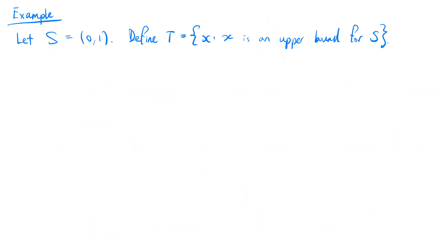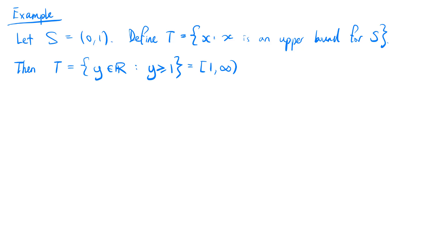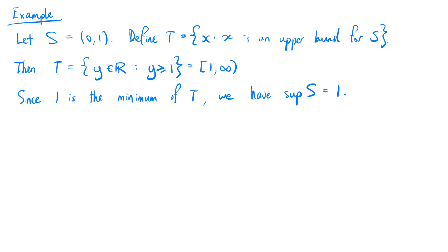Let's look at an example. Let s be the open interval (0,1). Define the set t to be the set of x where x is an upper bound for s. Then t is the set of real numbers y where y is greater than or equal to 1, which is the interval from 1 to infinity including 1. Since 1 is the minimum of t, we have that the supremum of s equals 1.